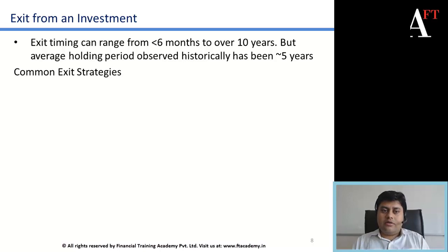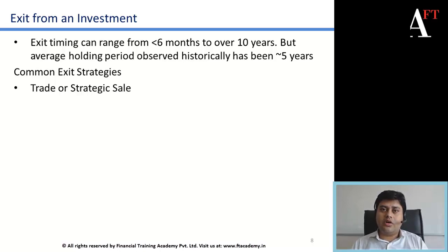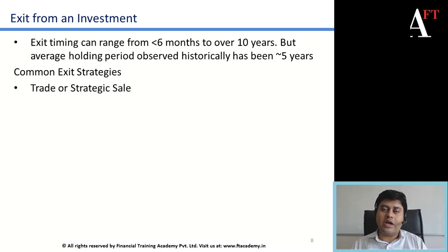The first common exit strategy is a trade or strategic sale. This entails the exit from an investment by a VC or PE fund by selling their stockholding or shareholding to a competing firm of the target company. For example, if a company in the telecom services sector has been invested in by the VC fund and 5 years later the fund is looking at an exit and feels that an IPO is not the right mechanism, they may sell their entire stake to another telecom services company in the same or another geography — that would be termed a trade or strategic sale exit.